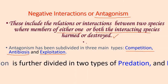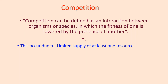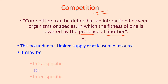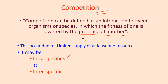Exploitation is further divided into two types: predation and parasitism. First, competition — it is an antagonistic interaction in which two or more members of the same species or two different species of the same trophic level compete for common resources like light, moisture, nutrients, etc., which are in short supply. Competition can be defined as an interaction where the fitness of one organism is lowered by the presence of another. It may be intraspecific or interspecific.